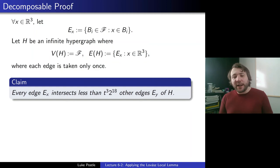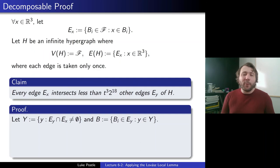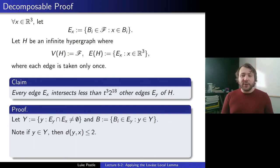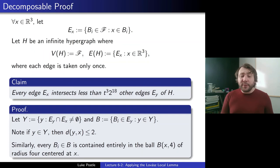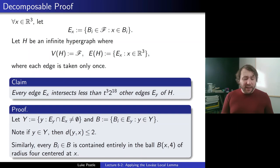Let's prove this claim using geometry. Let Y be the set of points y in R³ where Ey ∩ Ex is non-empty, and let B be the set of all balls in all such Ey. If y is in Y, then d(y,x) ≤ 2, because for there to be overlap between a ball containing x and a ball containing y (unit balls), the distance is at most 2. This implies that every ball Bi in B is contained entirely in the ball of radius 4 centered at x — since the ball contains a point distance 2 away and has diameter 2, it's within radius 4.